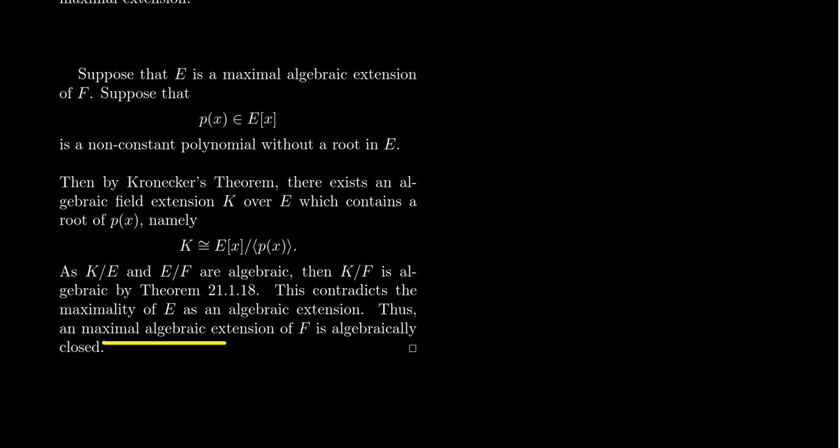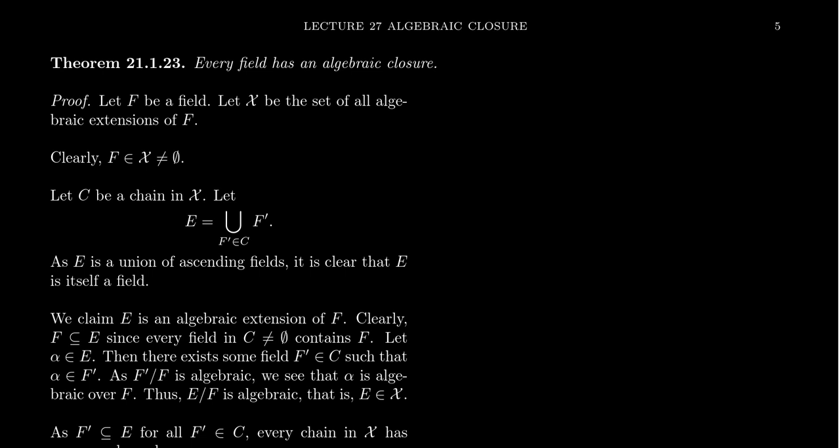So a field E is an algebraic closure of F if and only if it's a maximal algebraic extension. This is a very important observation, because it will be the main argument used in the forthcoming Zorn's Lemma proof. By Zorn's Lemma, the basic template is: come up with a partially ordered set, argue it's non-empty, take an arbitrary chain and argue it has an upper bound in the set, then invoke Zorn's Lemma to get a maximal element, which we'll argue is an algebraic closure.